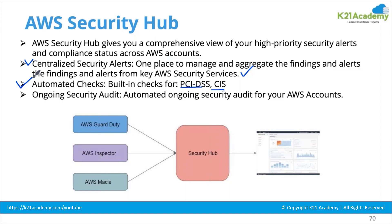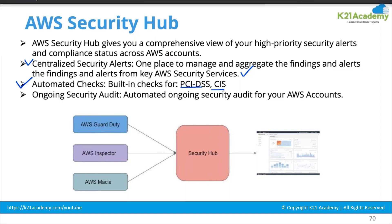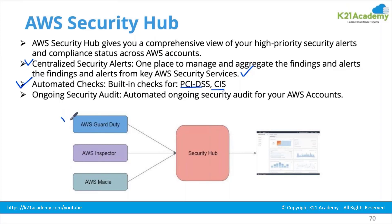The ongoing security audit keeps running continuously in your AWS account. As you can see in the diagram, findings from GuardDuty, Inspector, and AWS Macie are all centralized in AWS Security Hub. It gives you a visualization dashboard where you can see how many resources are in compliance, whether there are any security threats, how many resources need action, and their status shown in green, blue, or red.